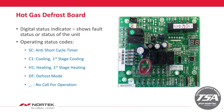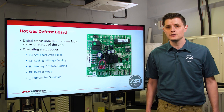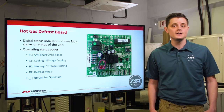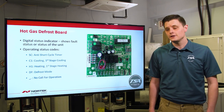SC will stand for your short cycle timer. C1 is your first stage cooling. H1 is going to be your first stage heat pump operation. Defrost mode will show DF, and if you see an exclamation point or a dash and a period on the digital, that just means you're in standby mode and ready for a call. On a two-stage unit you will also have a C2 and an H2 to indicate second stage.